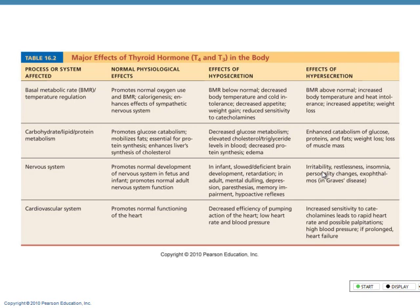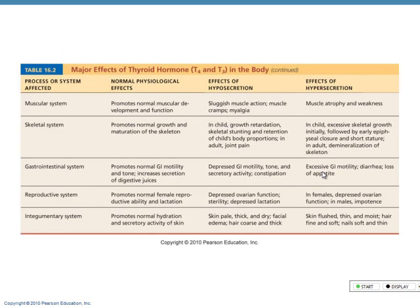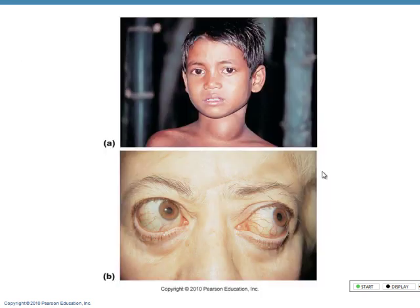Hyposecretion means not enough; hypersecretion means too much. We also have muscular, skeletal, gastrointestinal, reproductive, and integumentary systems all affected by these hormones. Pretty much all systems in the body are affected — too much or not enough can cause problems with metabolism.